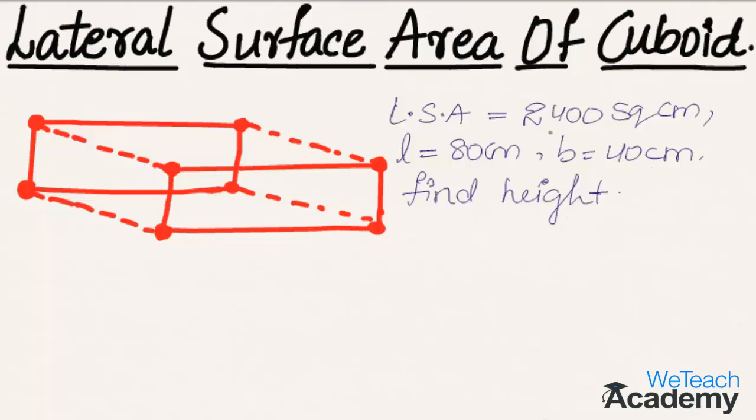We already know that lateral surface area is given by the formula 2h(l + b), which is to be equated to the given lateral surface area, that is 2400. Then substituting the values of l and b in the formula, we get 2h into 80 plus 40, which equals 2400.